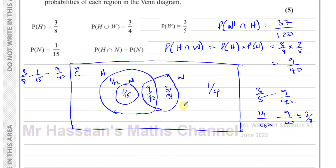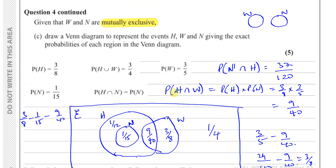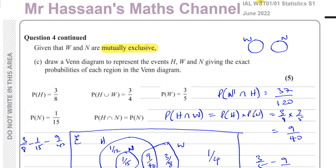That concludes question number 4 from this June 2020 S1 paper from International A-Level. Other questions from this paper can be found in the playlist appearing on screen, as can other questions from the topic of probability from S1. You can subscribe to the channel by clicking the link. Thank you for watching and see you soon.